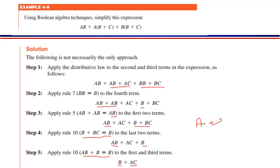Step number four mein hum ne B + BC par rule number ten apply karna hai. Rule hai: A + AB = A. Is case mein B + BC hai, toh rule number ten se B + BC = B apply kiya aur B + BC ki jagah hum ne likh liya B. Ab pehli aur teesri term AB aur B ko combine kar ke AB + B likha gaya. Dobara rule number ten apply hoga: AB + B = B. Toh AB + B ki jagah hum ne B likh liya aur AC wali term isi tarah likhi aayi.